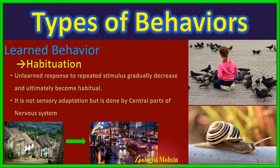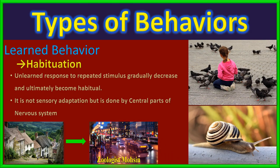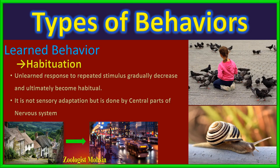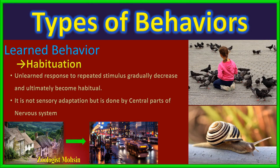Habituation is not sensory adaptation because all the processing occurs in the central nervous system, not in the peripheral nervous system. In conclusion, when a stimulus is repeated with no harm, the organism learns to ignore it and becomes habitual.